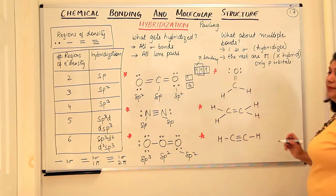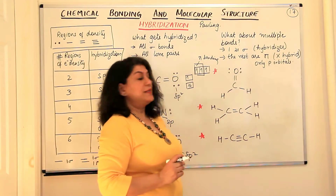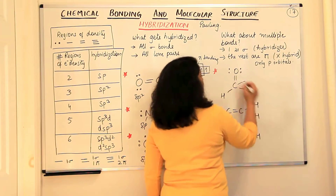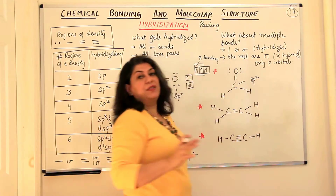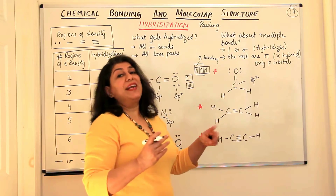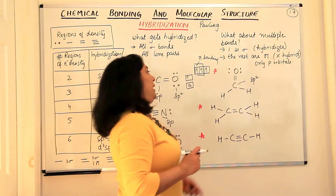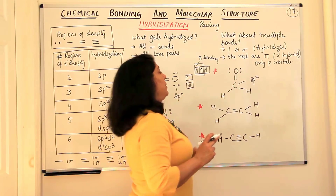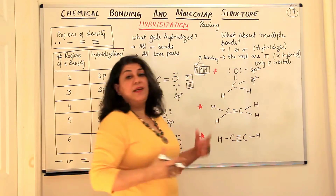Let us now come to formaldehyde (HCHO). Carbon here has three sigma bonds, arranged along three corners of a triangle, so it is sp2 hybridized. Hydrogen never participates in hybridization because for hybridization you need at least two orbitals which are at least half-filled, and hydrogen has only one electron in one orbital. Oxygen has two lone pairs and one sigma bond — three regions — so oxygen is also sp2 hybridized.